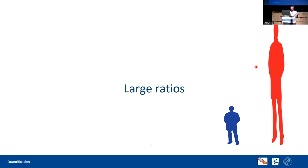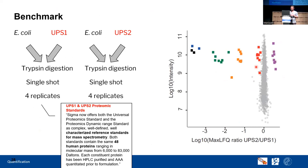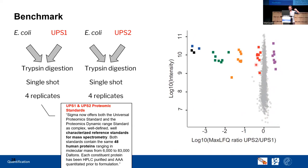For large ratios, benchmarking was done with UPS1 and UPS2 standards containing 48 human proteins spiked in at always a factor of 10 in abundance. In log-10 space you can see the background around zero — the one-to-one proteins that LFQ correctly normalizes to one — and the different spiked-in abundance differences are clearly recovered at the expected tenfold differences.